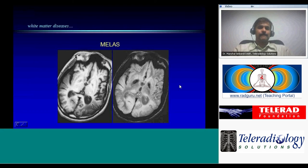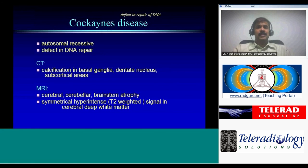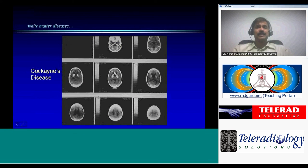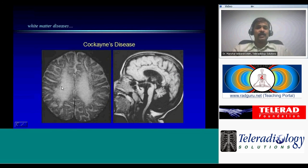Cockayne's disease is caused by a defect in DNA repair and is autosomal recessive. On CT, calcification is seen in the basal ganglia, dentate nucleus, and subcortical areas — another demyelinating disease associated with calcifications. On MRI, there is cerebral, cerebellar, and brainstem atrophy, with symmetric hyperintense signal in the cerebral deep white matter due to demyelination. Imaging shows extensive calcification in the cerebellum, basal ganglia, and subcortical white matter, along with demyelination in the cerebral hemispheres and cerebellar hypoplasia on sagittal views.